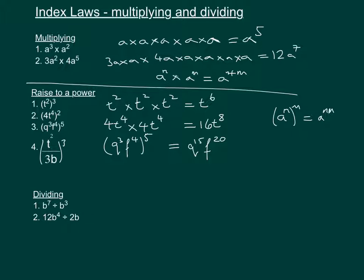For the last power example we have t squared over 3b, to the power of 3. That gives us t squared over 3b, times t squared over 3b, times t squared over 3b. On the numerator we get t to the power of 6, and on the denominator we get 3 cubed which is 27, and b to the power of 3.